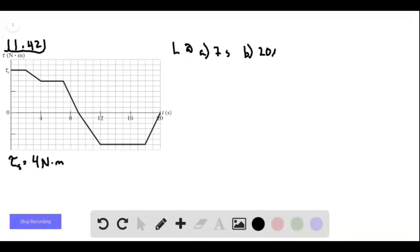Problem 11.42. We have a disk that is initially stationary, so its angular momentum is initially 0.